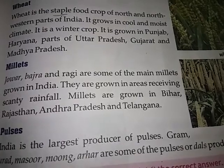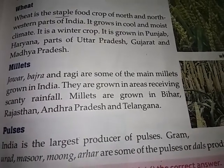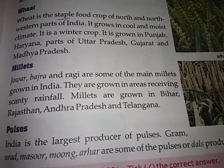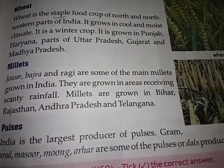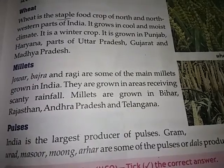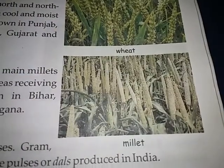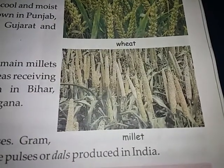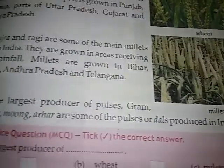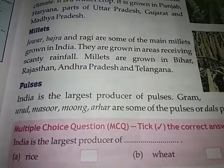Millets: Jowar, Bajra and Ragi are some of the main millets grown in India. They are grown in areas receiving scanty rainfall. Millets are grown in Bihar, Rajasthan, Uttar Pradesh and Telangana. Here is a picture of millet.